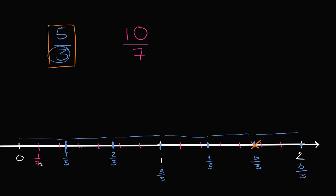So this is 1/7. This is 2/7, 3/7, 4/7, 5/7, 6/7. This is 7/7. I could write that down. 1 is the same thing as 7/7. 8/7, 9/7, 10/7 right over here. This right over here is 10/7.